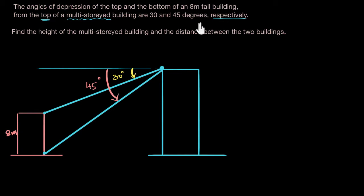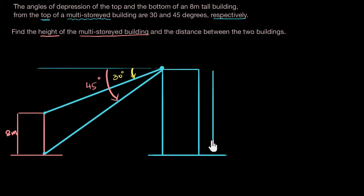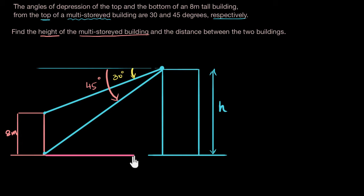Now I need to know — what does the question want? Find the height of the multi-storied building. This height is what we want. Whenever I don't know the name of something, I'm just going to give it a name. This height is what I want, and the distance between the two buildings — that is this one over here. This distance is the other thing that we want.